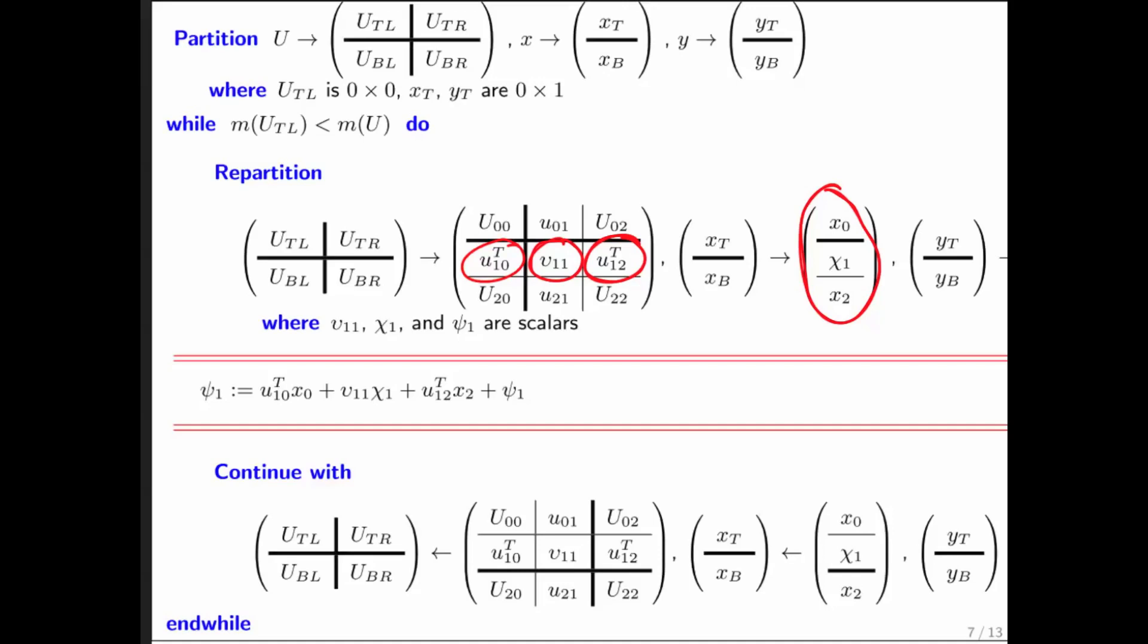If we did all of these computations, we would end up doing this right here. But what we just argued is that this part is always equal to 0, and therefore we don't need to do it. That saves us computation.